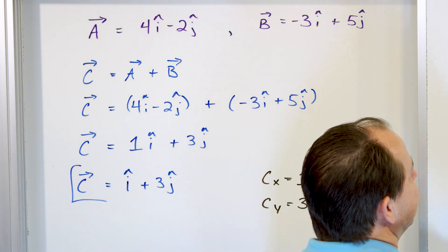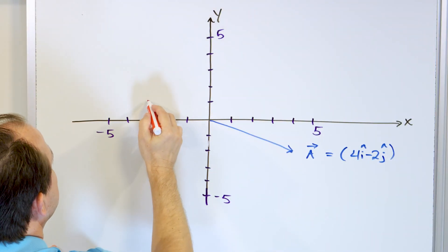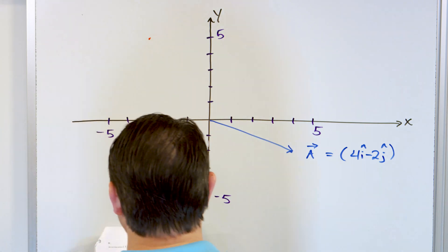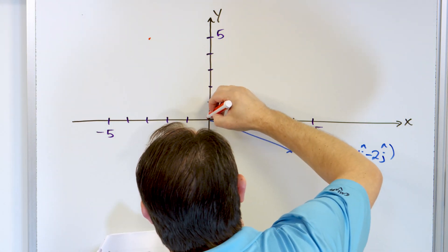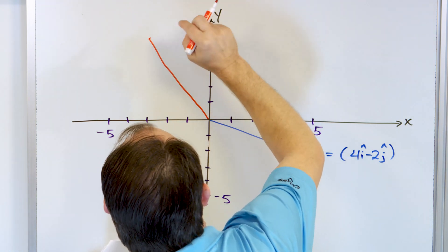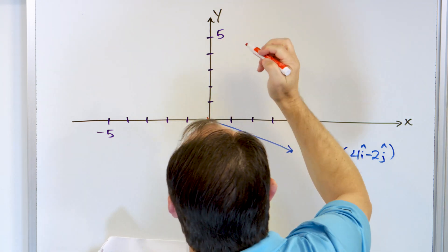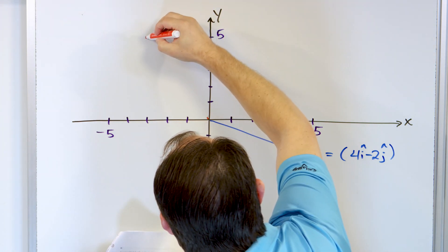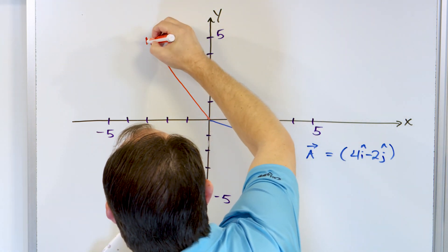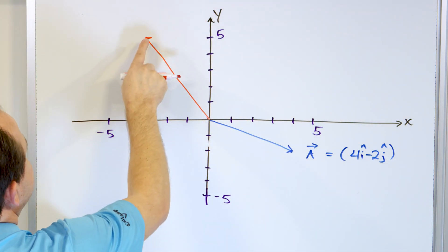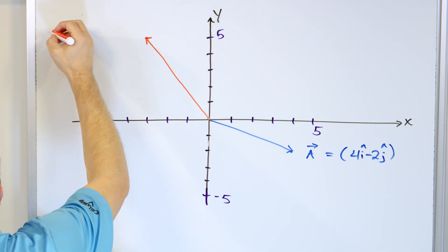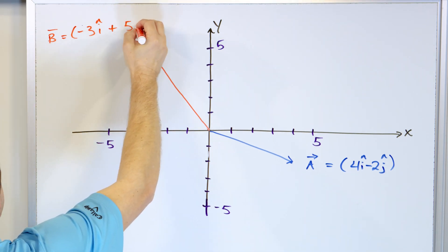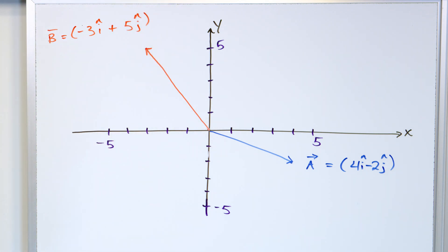Vector B has negative 3 in the i direction and 5 in the j direction, so it points to coordinates (-3, 5). I draw that vector to that point. This is vector B: negative 3i plus 5j, which is just the x and y directions. So those are vectors A and B drawn on the axes.